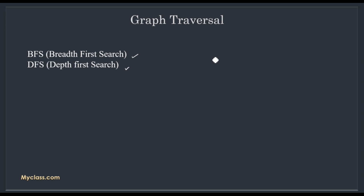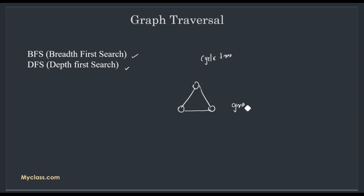We all know that a graph is also tree-like — we can say it is a cyclic tree. If this is a tree and there is an edge creating a cycle, then we can say it is not a tree, it is a graph. The traversal of a graph looks very similar to traversal of a tree.